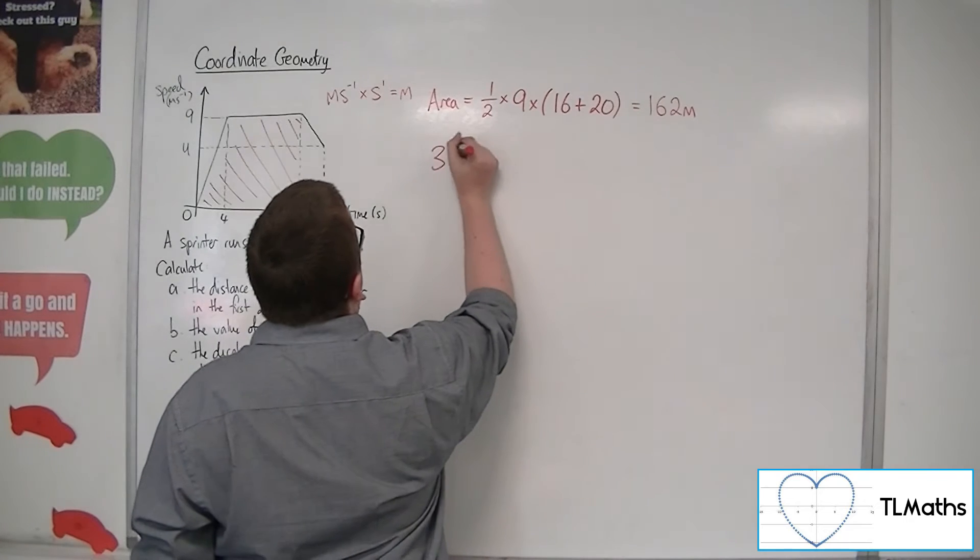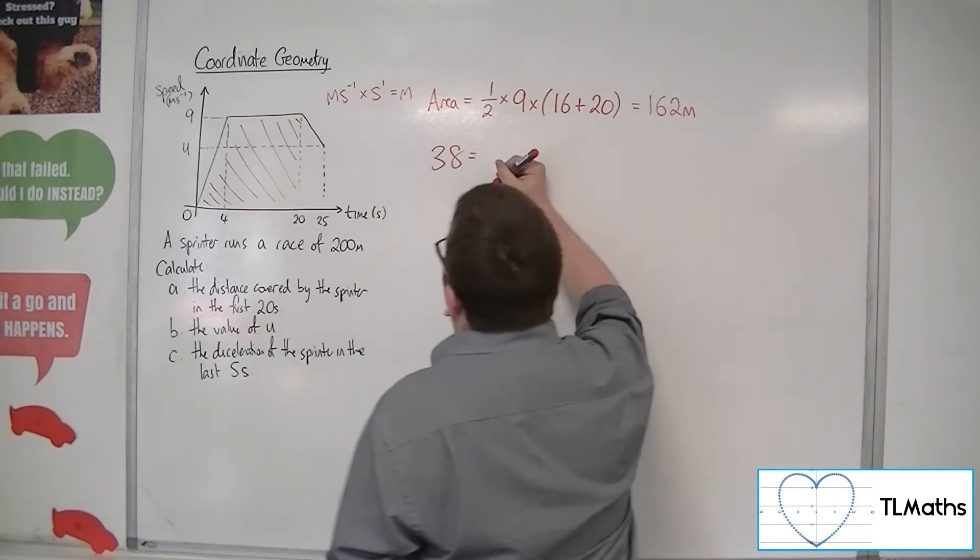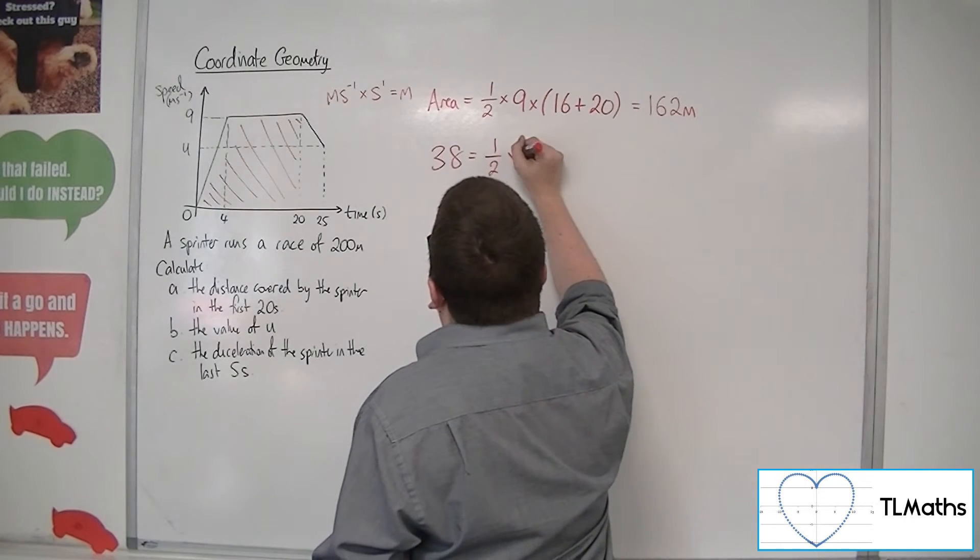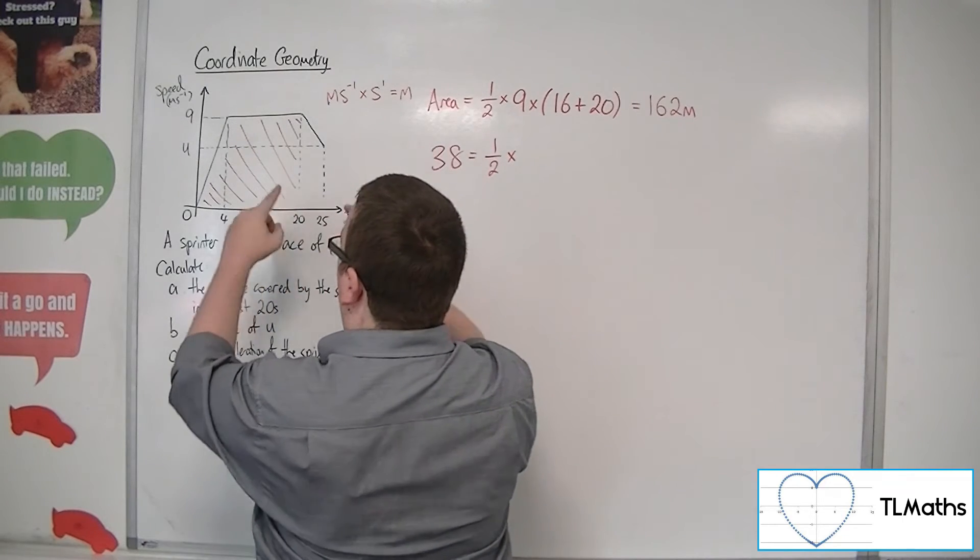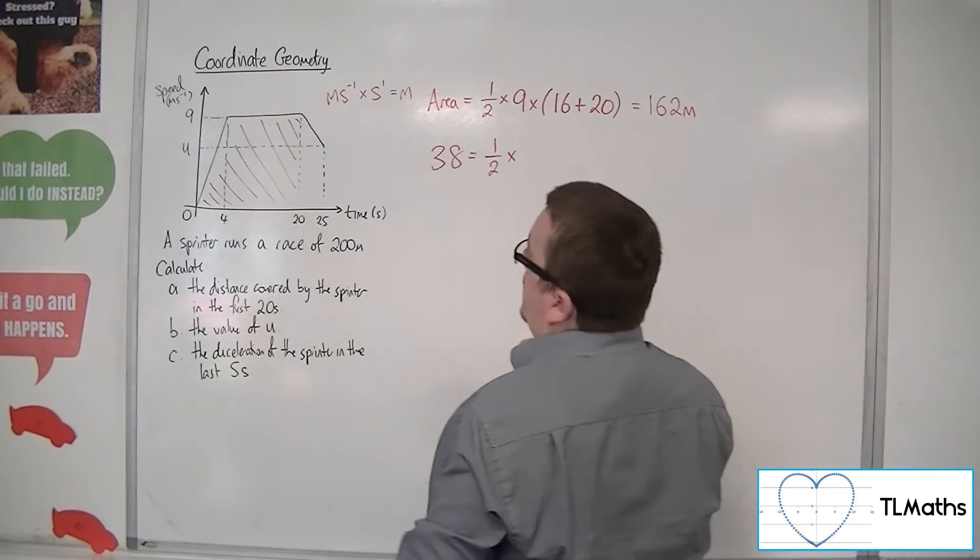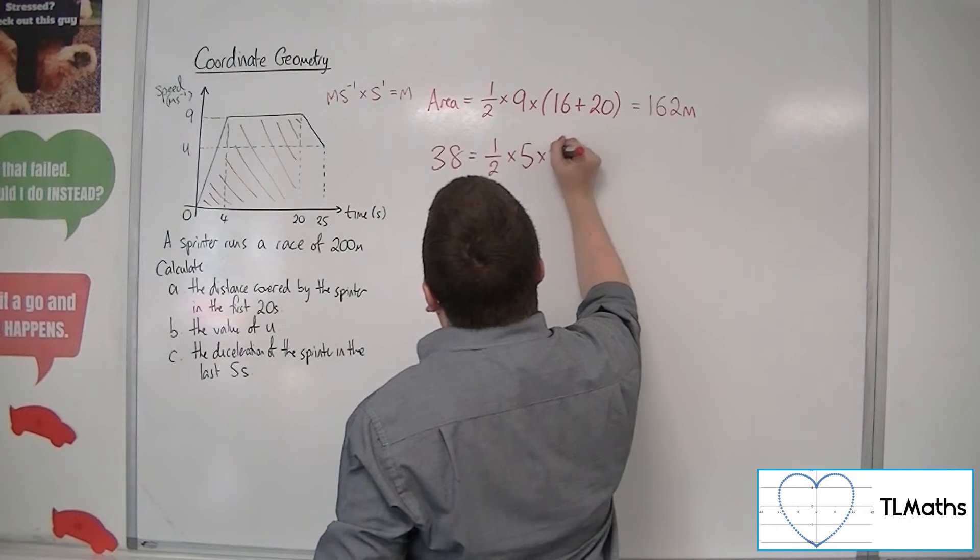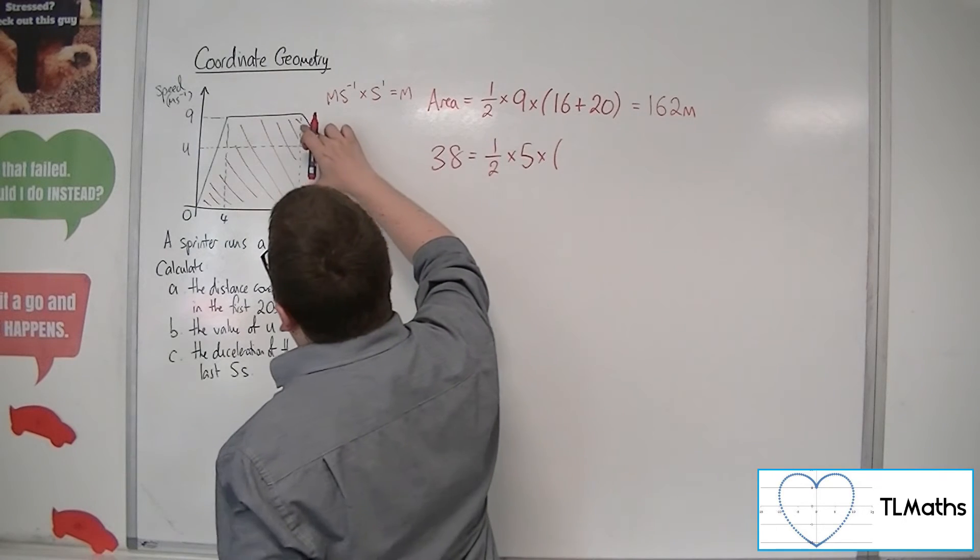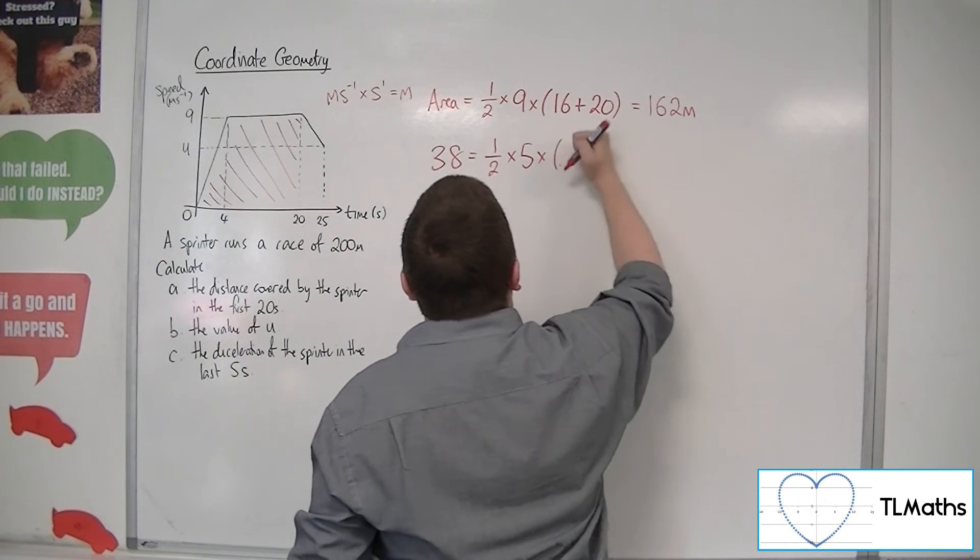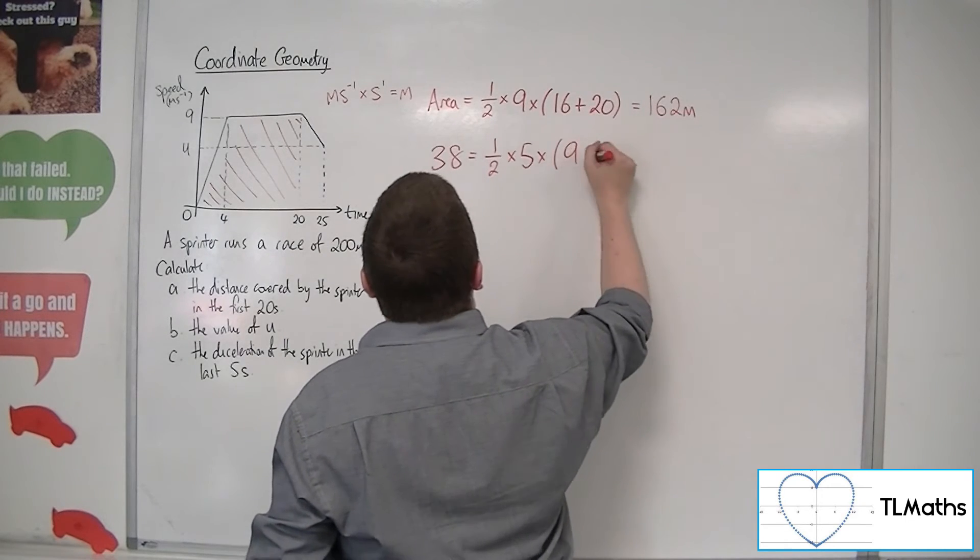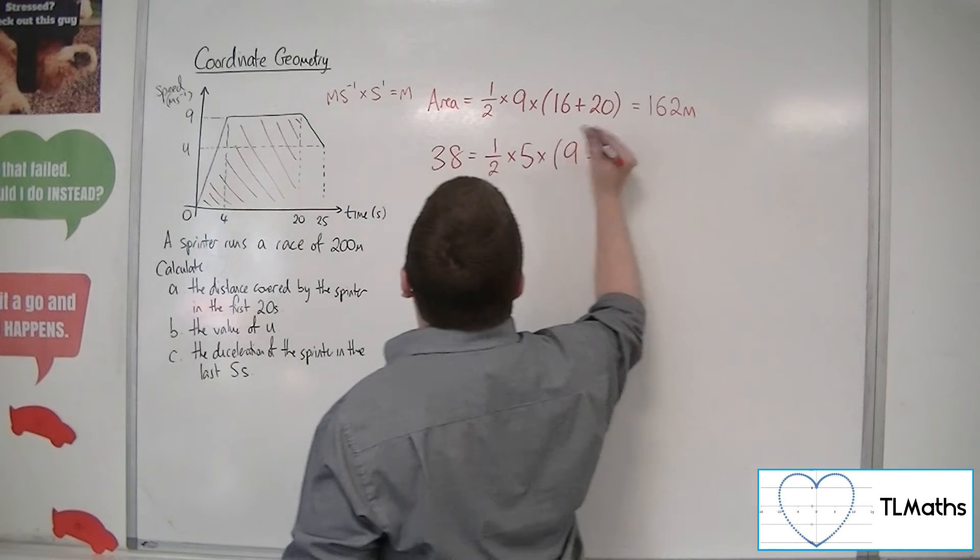So if this part covers the first 162 metres, then we have 38 metres remaining for the area of this trapezium. So 38 must be the area of another trapezium, where the height this time is effectively width because it's on its side now, and that's 5, times by the height here of 20... not 20, sorry, it's not the height there, it's 9,